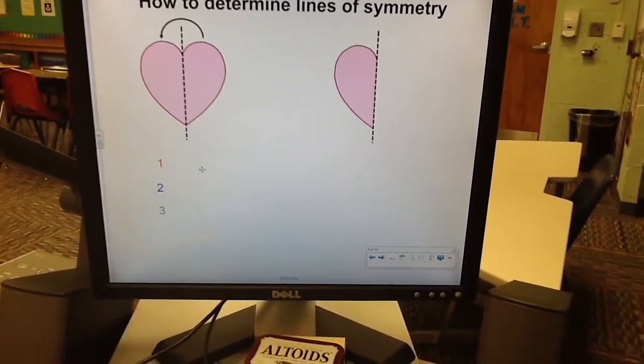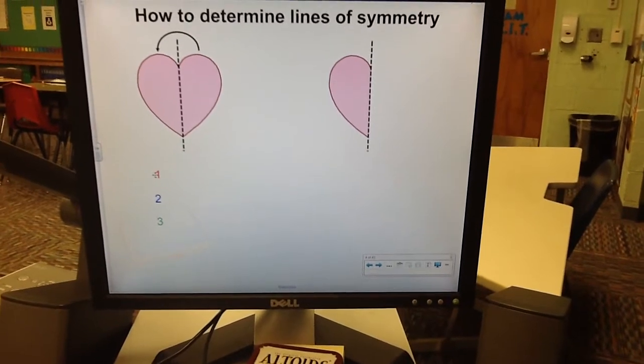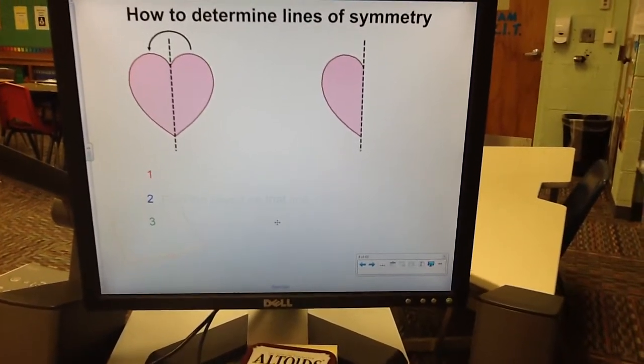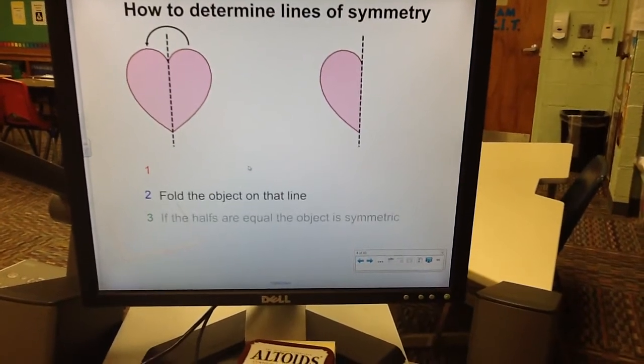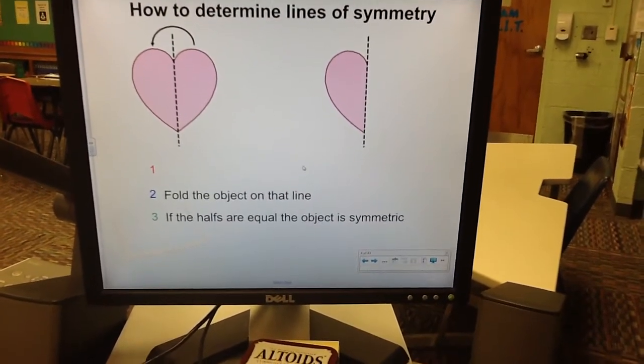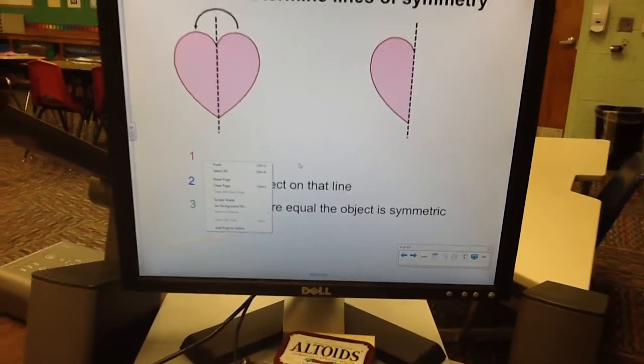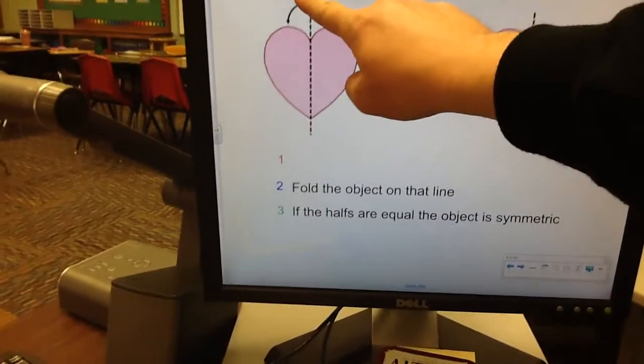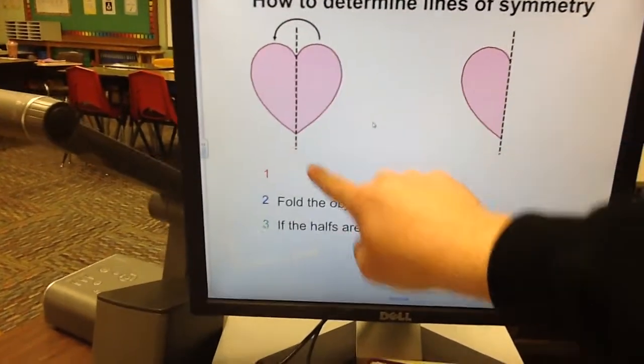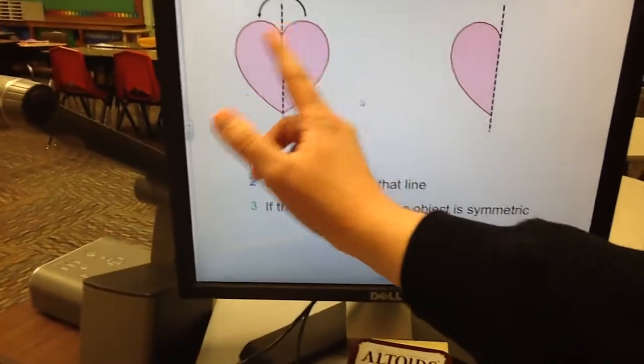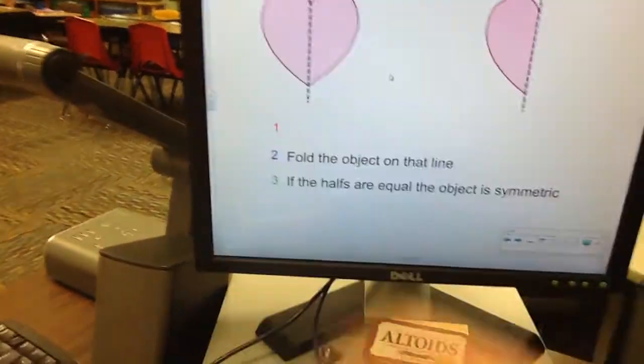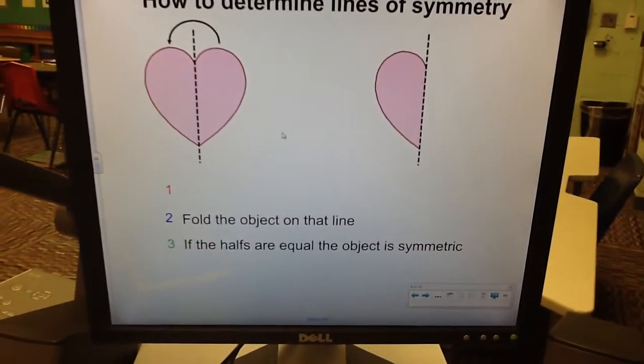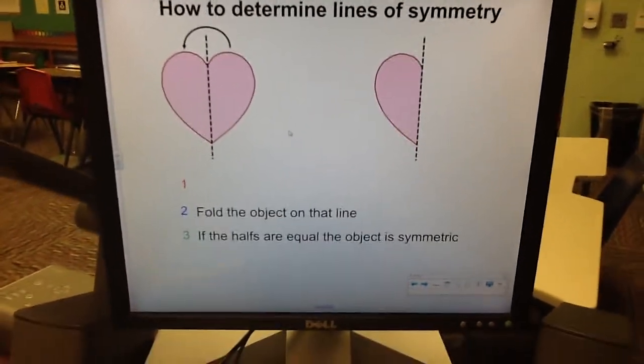How to define lines of symmetry? Well, sometimes technology is goofy. That's okay. If you can draw a line down the middle of an object, fold the object over that line, so this half would fold over this way. If the halves are equal, the object is symmetric. The line of symmetry is accurate.